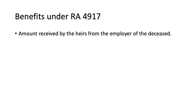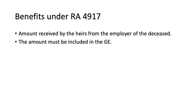Benefits under RA 4917: these are amounts received by the heirs from the employer of the deceased. When the deceased was a former employee and upon his death the employer gave an amount to his heirs, those amounts must first be included in the gross estate and then deducted as an allowable deduction — this ensures the government confirms the amount is properly accounted for.